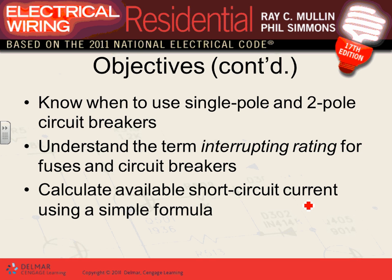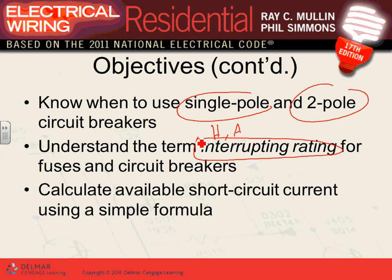Every time we talk about a single pole, this is a phase or a hot. Two poles is two phases and two hots for circuit breakers. The interrupting rating of circuit breakers is very important — you need to understand how much a circuit breaker can interrupt under normal operating voltage for that system.